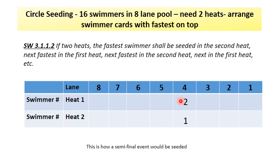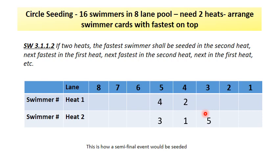You then move to the left of the fastest swimmers and place your third fastest in heat two lane five. Your fourth fastest swimmer would go into heat one lane five. You then move to the right of the faster swimmers in lane three and place the next two swimmers, beginning with heat two and then heat one. Continue this line seating alternating left and right until all lanes are full.